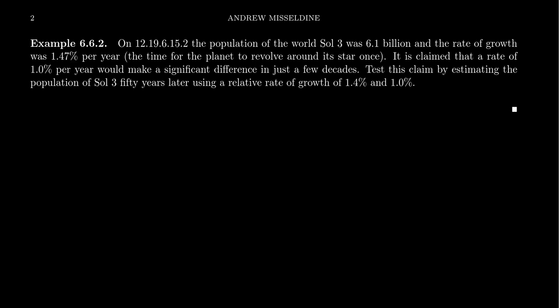It's claimed that if the growth rate was reduced to 1.0, or just 1%, per revolution around the star, that this would make a significant difference in the population growth over a few decades. So we want to test this hypothesis. If we decrease the growth rate from 1.47% to 1%, what would be the difference 50 years later? So 50 revolutions around the star later, how'd that affect the people of Sol 3?